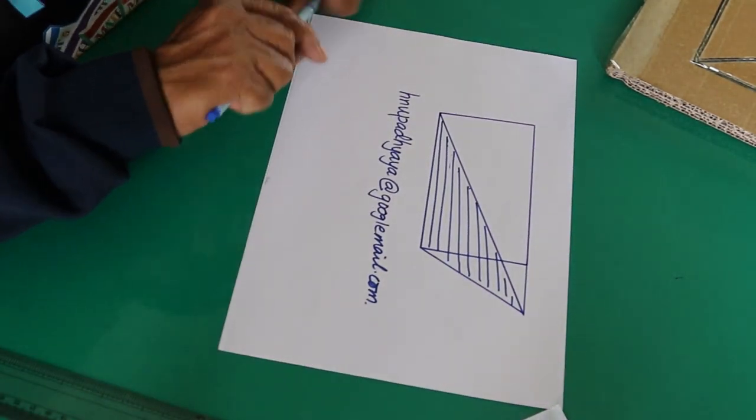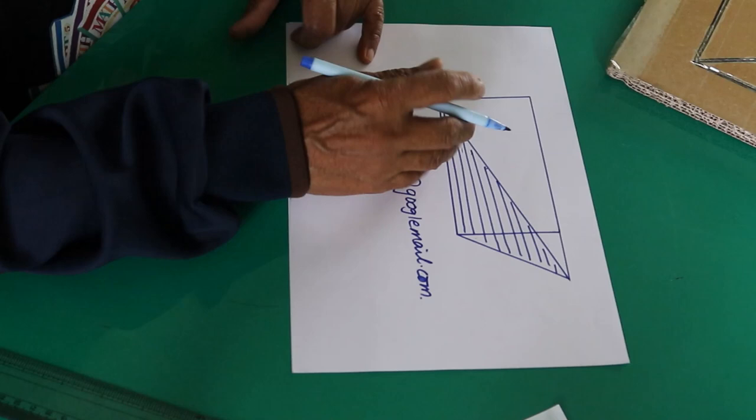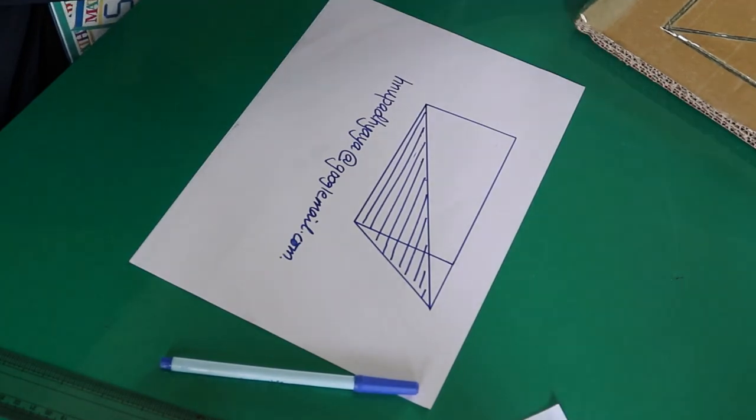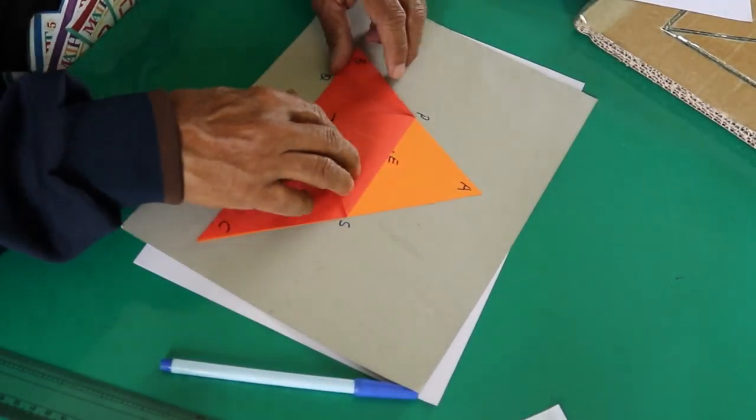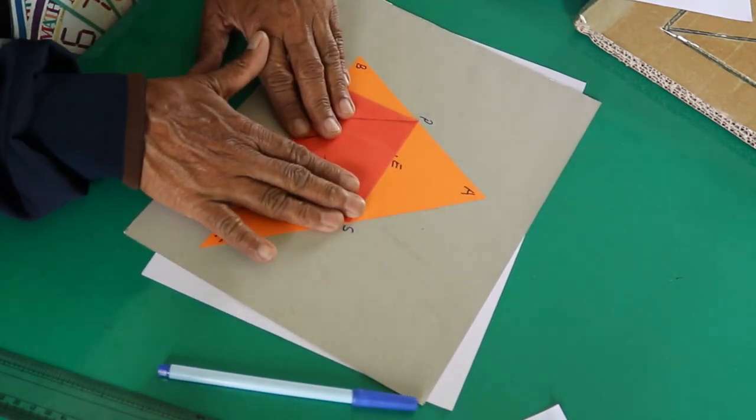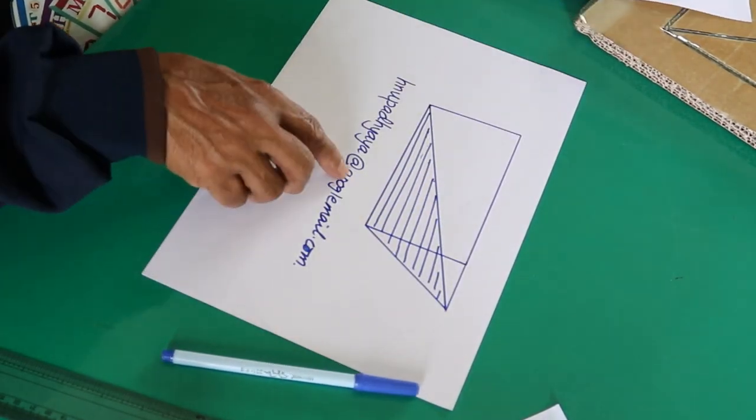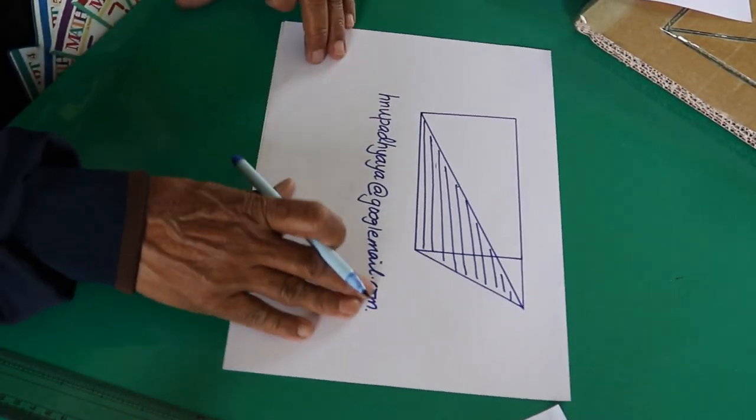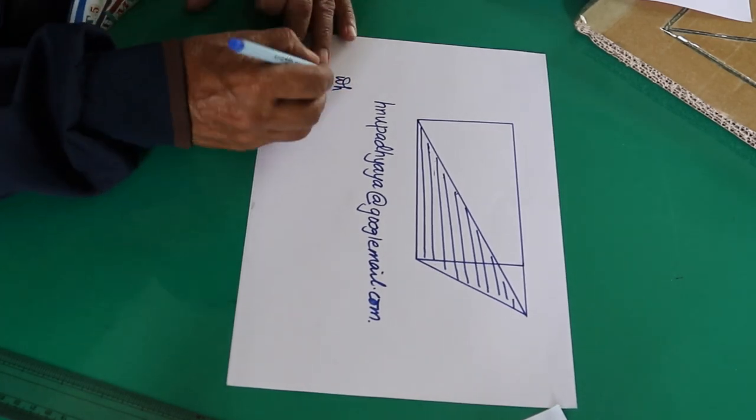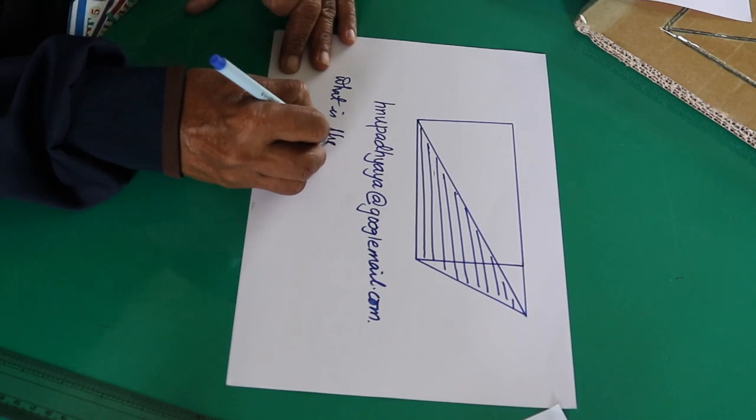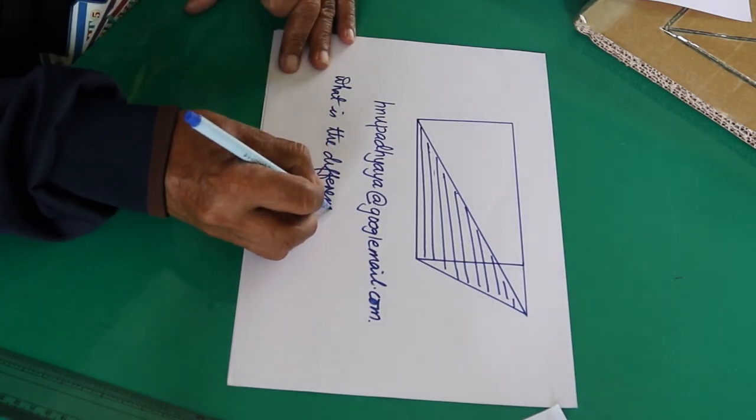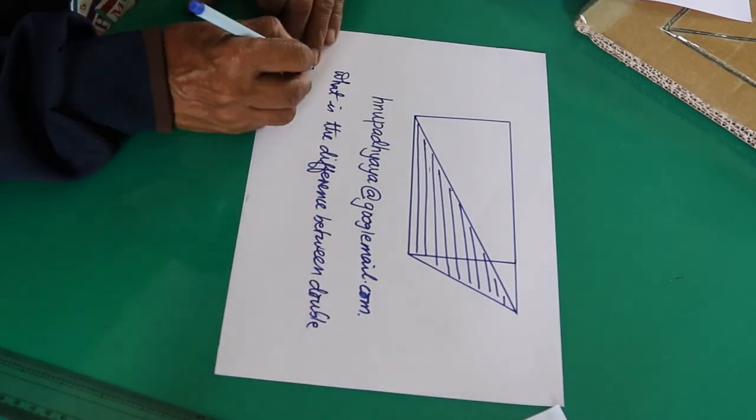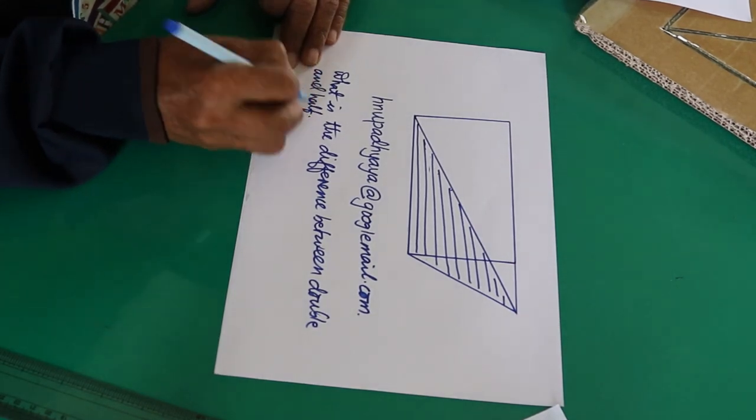And another thing, thought question is like this. I have said that we have used last time the area of the triangle is, the area of this triangle is double of this rectangle. Double. Here I have said the area of this triangle is half of the rectangle. So what is the difference between double and half?